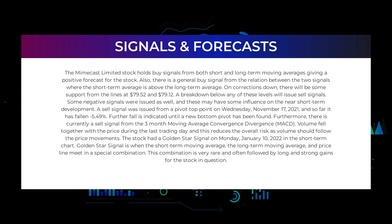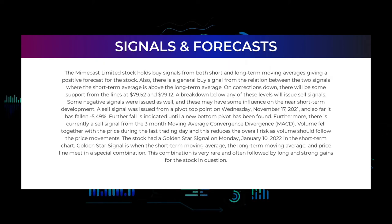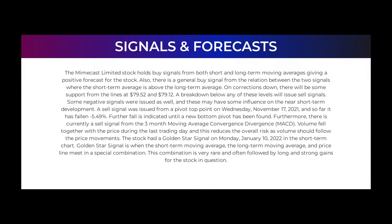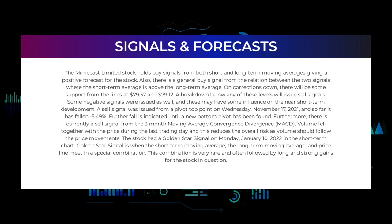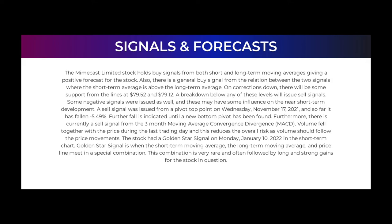In this section we will give you some information about signals found for Mimecast Limited. Starting with the general picture: the stock holds buy signals from both short and long-term moving averages, giving a positive forecast. There is also a general buy signal from the relation between the two signals — the short-term average is above the long-term average. On corrections down there will be some support from the lines at $79.52 and $79.12. A breakdown below any of these levels will issue sell signals.